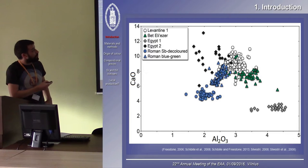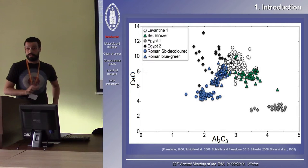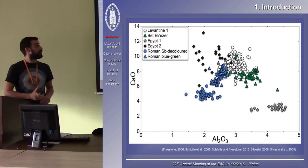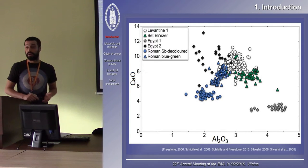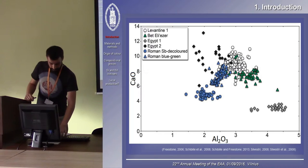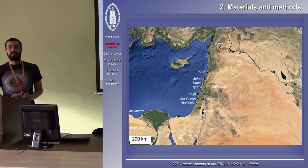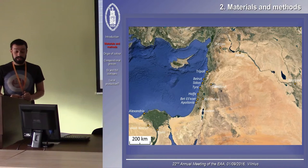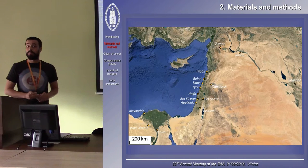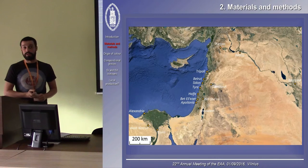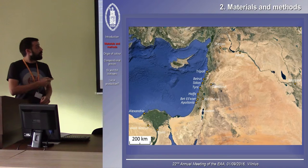Some of these groups, such as the Bet Eli'ezer group, can be traced back to particular production sites in Israel and some in Egypt, but for others, such as the Roman Blue-Green group and the Roman Antimony decolorizer group, we have no idea where they were produced. So to gain some more insights into the organization of the Roman glass industry, we analyzed some late Hellenistic to early Roman glass artifacts from Beirut.